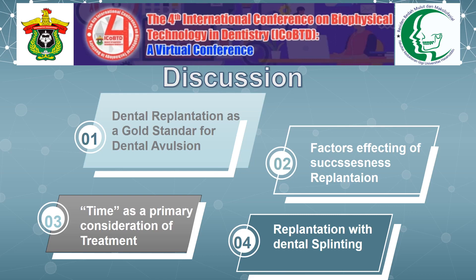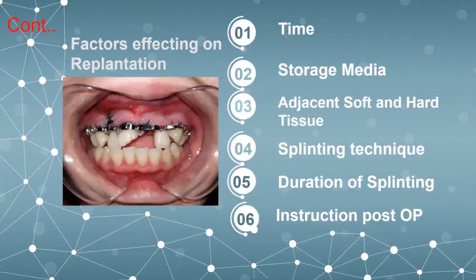Dental replantation is the gold standard for dental avulsion. However, before the replantation procedure, there are several considerations that must be addressed because they affect the success of replantation. Time is the primary consideration. This procedure requires skill because replantation is also accompanied by fixation and splinting techniques. The factors affecting replantation success are: time, storage media, condition of adjacent soft and hard tissue, splinting technique chosen, duration of splinting, and post-operation instructions.